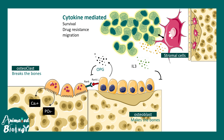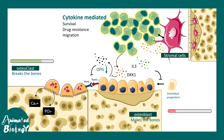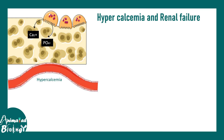Myeloma cells secrete interleukin-3, which prevents osteoblast progenitors from becoming osteoblasts. They also secrete DKK1, a WNT modulator, which prevents OPG from functioning. When OPG is downregulated, RANK and RANKL signaling is upregulated, dissolving the bone and releasing too much calcium into the blood. Overall, osteoclastic activity increases and osteoblast activity decreases, leading to bone dissolution and hypercalcemia.